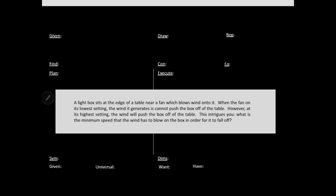Let's look at this problem where we have a light box sitting at the edge of a table. There's a fan nearby blowing wind onto it. We'll use a small w for the wind speed. When the wind is going very slowly, the box stays there due to friction, but when it goes fast enough, it falls off. What we really want to know is the minimum speed the wind has to blow for the box to fall off, or equivalently, the maximum speed for it to stay.